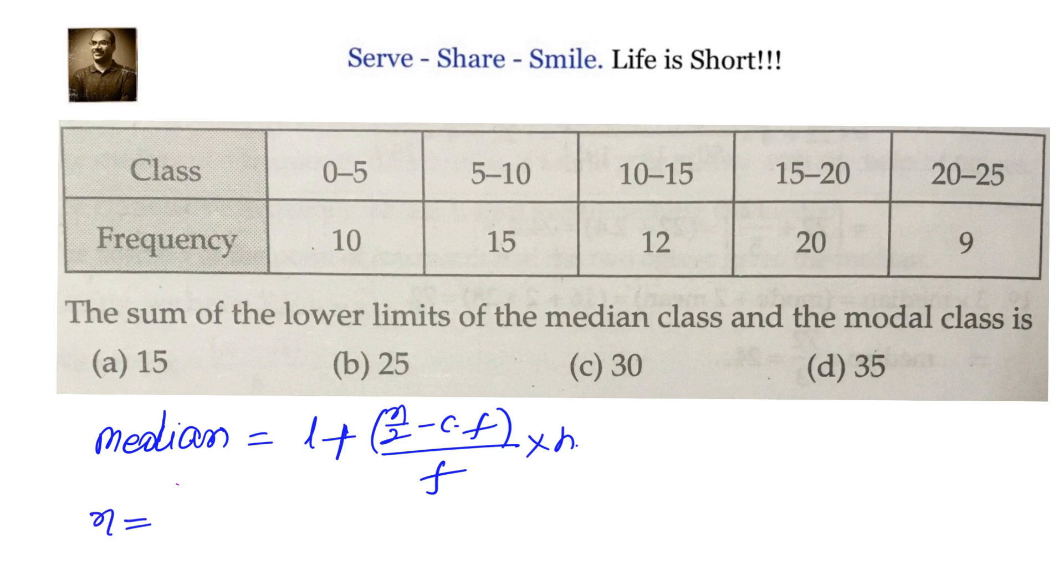Which is 10 plus 15 equals 25, plus 12 equals 37, plus 20 equals 57, plus 9 equals 66. So n/2 equals to 33. Now we have to understand what will be the values in the cumulative frequency column. We'll have 10,